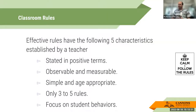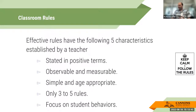Effective rules have five characteristics. First, they're stated in positive terms — what do you want students to do? For example, 'raise your hand to get my attention.' Second, they need to be observable and measurable — avoid vagueness. Third, keep things simple and age-appropriate. Even in middle school, there's a big difference between a student who just turned 12 and one almost 14 and heading to high school. The simpler you keep it, the better students will remember it.